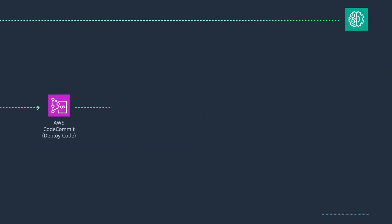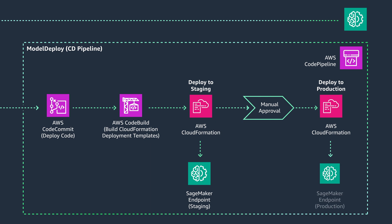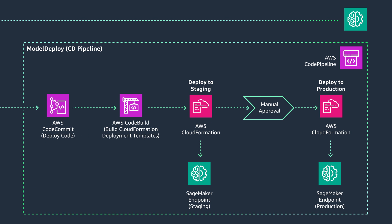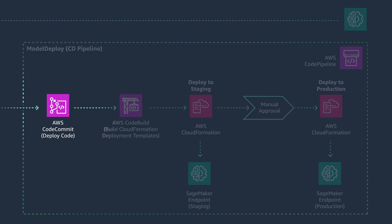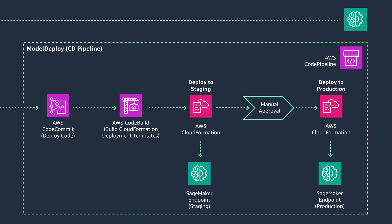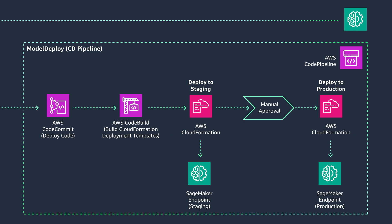In the next part of the architecture is the model propagation to staging and production. Here, we need a new pipeline that will push the model and its dependencies upstream. This capability is incorporated by Amazon SageMaker projects. Under the hood, we use AWS DevOps services such as CodeCommit, CodeBuild, CodePipeline, and CloudFormation to make this happen. As a data scientist, you can configure the model performance metrics to allow propagation upstream. Many customers will probably want manual intervention before promoting to production, and this can also be configured in the code pipeline.